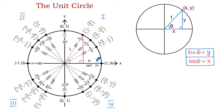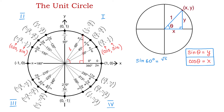Returning to the unit circle, each x-coordinate represents cosine of the corresponding angle, and each y-coordinate represents sine. So the first coordinate of each point is cosine and the second is sine. For example, to find sine of 60 degrees, we locate 60 degrees on the unit circle and read the second coordinate: √3/2. So sine of 60 degrees equals √3/2. To find cosine of 2π/3, which is in quadrant 2 and equivalent to 120 degrees, the x-coordinate gives us −1/2, so cosine of 2π/3 equals −1/2.